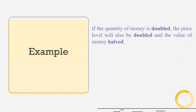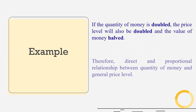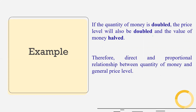Let's take an example. If the quantity of money is doubled, the price level will also be doubled and the value of money halved. Therefore, we have a direct and proportional relationship between quantity of money and general price level. If quantity of money is doubled, the price level will also be doubled — that is the idea of Fisher's Quantity Theory of Money.